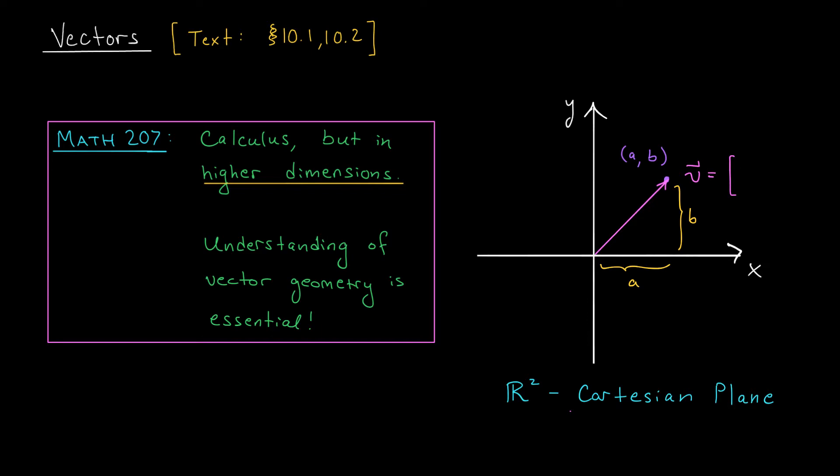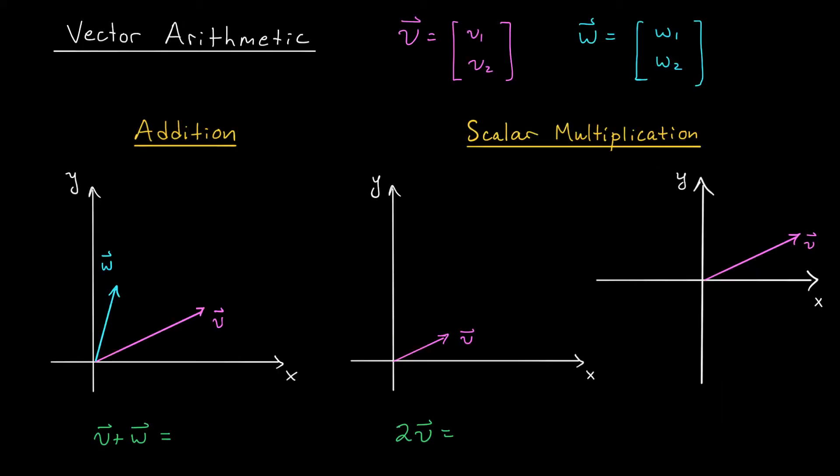Now we could represent this using either a column or some angled brackets, and I'm actually going to use both throughout the term. Now you may wonder, why on earth are we going through all this trouble of rewriting this point using one of these arrows? What do we gain from this? Well, it turns out that there are some very nice algebraic operations that we can do in R2 or R3 that are very nicely visualized when we represent this point using a vector. There are two basic types of operations that you can perform and visualize with vectors. They are addition and scalar multiplication.